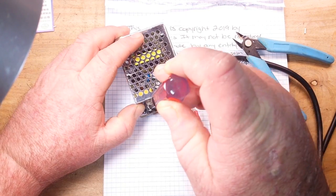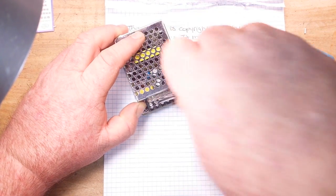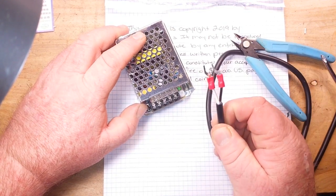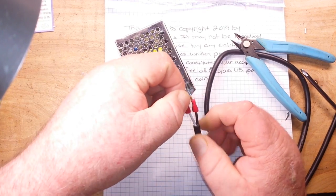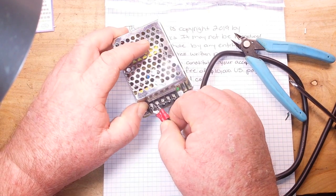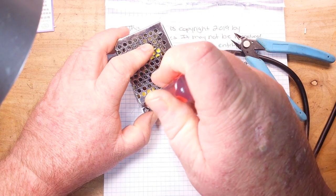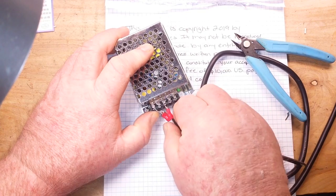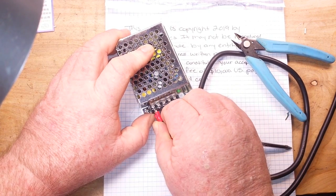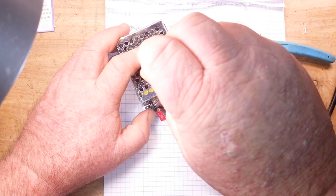Okay, so live on the outside, neutral on the inside. Now in the U.S. black is generally live, but I already checked this cable and it's wired backwards. So in this case the white is live. I don't know why, but it is, so that's what we're going with.